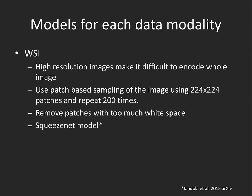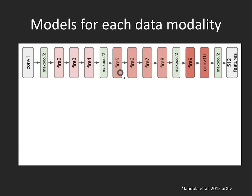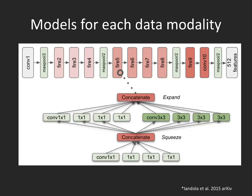For the whole slide images, we use a fully convolutional network approach with a patch-based model, patching whole slide images into 224×224 patches, repeated 200 times. We use the SqueezeNet model, a CNN trained on ImageNet, consisting of so-called fire modules where the image data is successively squeezed and expanded. We need this patching approach because whole slide images are very high resolution and cannot fit entirely into a CNN model.